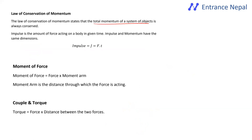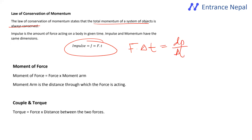The law of conservation of momentum states that the total momentum of a system always remains constant — initial momentum equals final momentum. Impulse is defined as force applied over a small fraction of time, and it equals the change in momentum.